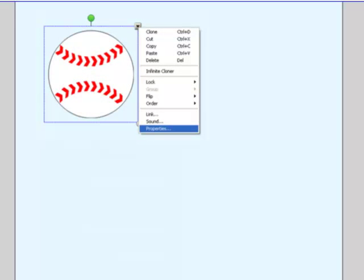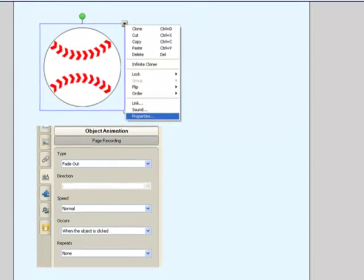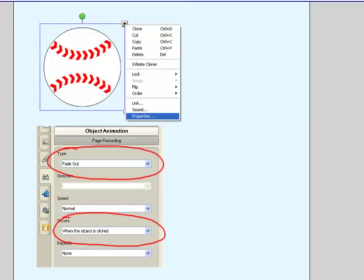First of all, I select the object, whether it's text, a picture, or a shape. Once I've selected it and it has that border around it, I have the menu arrow in the upper right corner. One of the choices on that menu is properties. When I select the properties of that object, one of my choices that appears says object animation. If I select the type of animation I want from this dropdown list, one of my choices is to fade out when the object is clicked. You'll notice you also have a choice of speed: slower, normal, or fast speed.